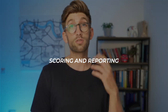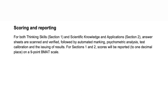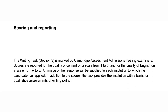For Thinking Skills and Scientific Knowledge, answer sheets are scanned and verified, followed by automated marking, psychometric analysis, test calibration and the issuing of results. For sections one and two, scores are reported to one decimal place on a nine-point BMAT scale.